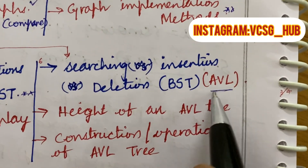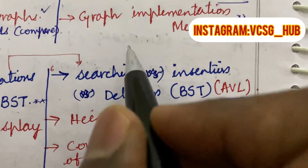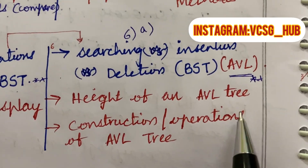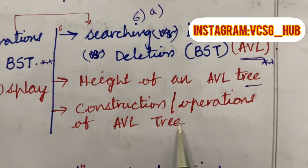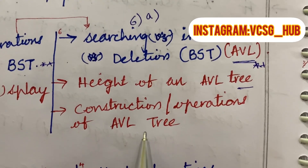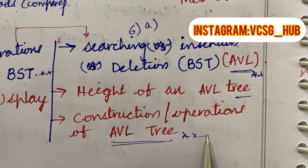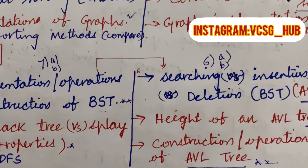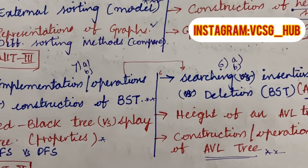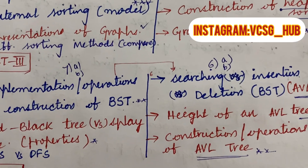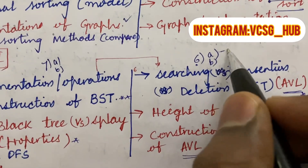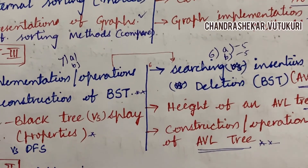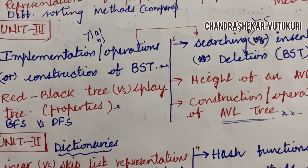Searching as well as insertion for AVL trees is also said to be a topmost question that may occur in 6A. Height of an AVL tree — define the term — may be a short question. The construction as well as operations of AVL tree is said to be the topmost question which may occur in 6B this time. Do not expect a direct 10-mark question unless the answer spans the full unit structure, or you may get a 5+5 split. Part B consists of 10 questions, with each unit giving 2 questions, and each question carries 10 marks.